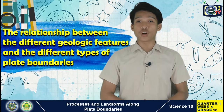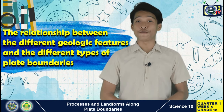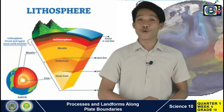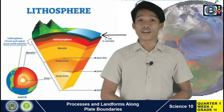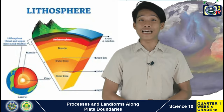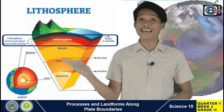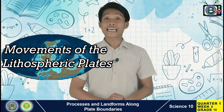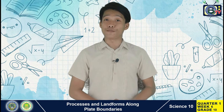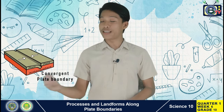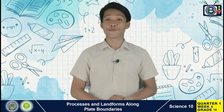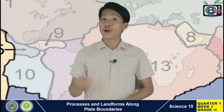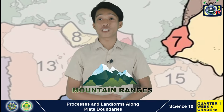For the past weeks, the relationship between the different geologic features as well as the different types of plate boundaries was discussed. In the first week of classes, you learned that the Earth's outer crust, or the lithosphere, is composed of a series of tectonic plates that move on a hot flowing mantle layer called the asthenosphere. The movements of the lithospheric plates can be classified into three types: the convergent plate boundary, the divergent plate boundary, and the transform-fault plate boundary. Along the plate margins, earthquakes, volcanoes, and mountain ranges are being formed.